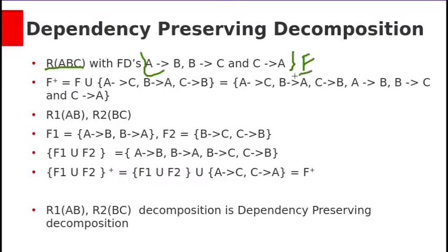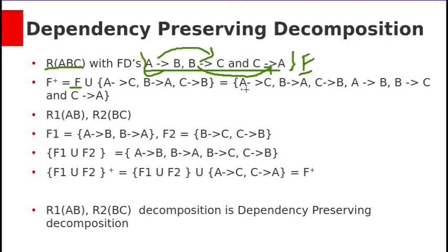The closure set F+ equals F union all inferred functional dependencies. From A → B and B → C we can infer A → C. From C → A and A → B we get C → B. From B → C and C → A we get B → A. So F+ is the union of the original functional dependencies in F and these additionally inferred functional dependencies.